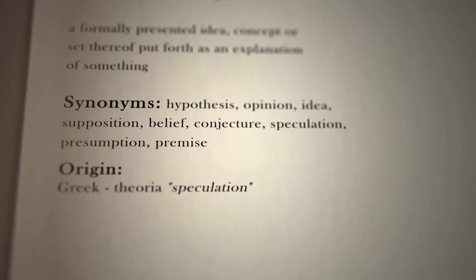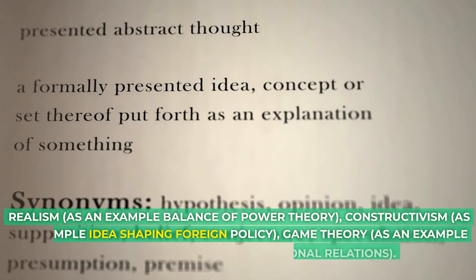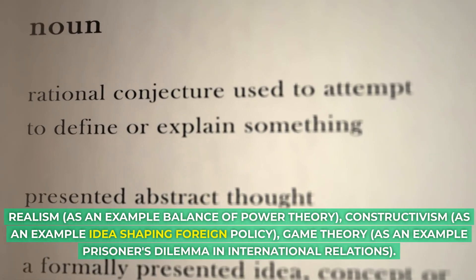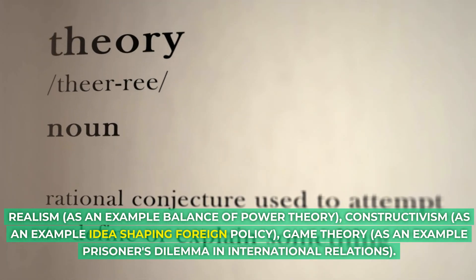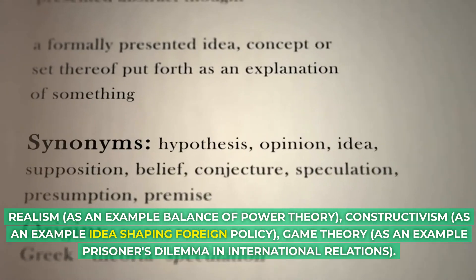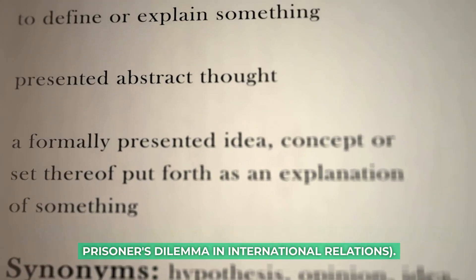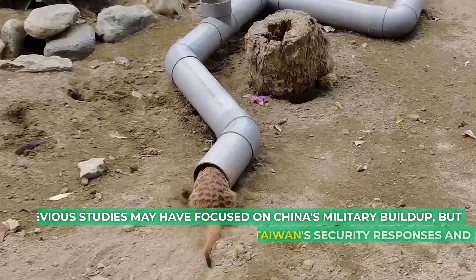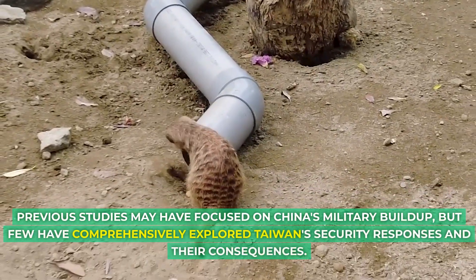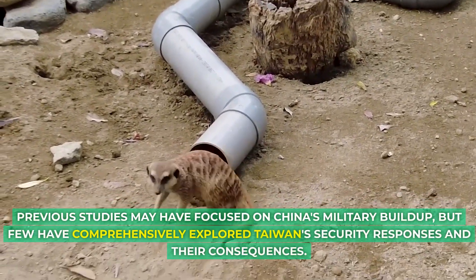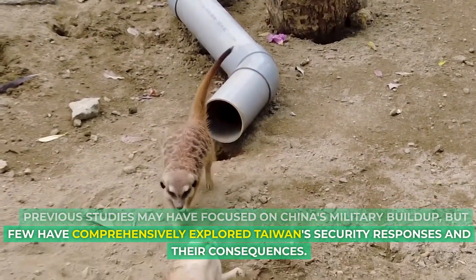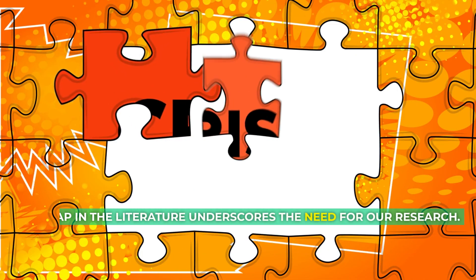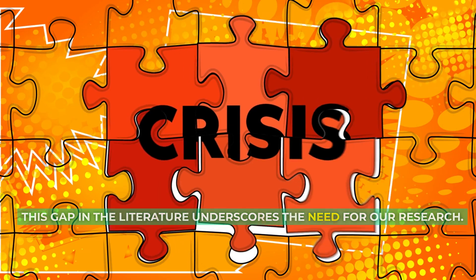Theories and models covered include: Realism, for example balance of power theory; Constructivism, for example ideas shaping foreign policy; and Game Theory, for example the prisoner's dilemma in international relations. Regarding the literature gap, previous studies may have focused on China's military buildup, but few have comprehensively explored Taiwan's security responses and their consequences — underscoring the need for our research.